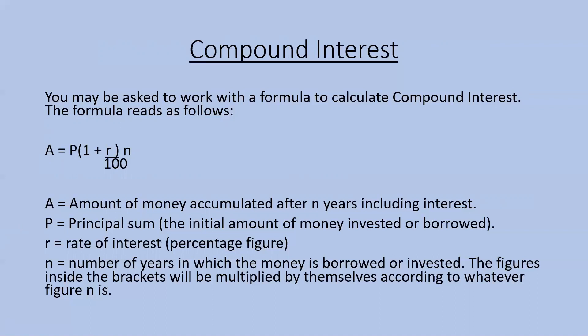In this formula, A is the amount of money accumulated after a particular number of years, including the interest — that's ultimately what we're trying to work out. P is the principal sum, the initial amount of money invested or borrowed. R is the rate of interest, the percentage figure, which is divided by 100, and we add 1 to that answer. N stands for the number of years in which the money is borrowed or invested.